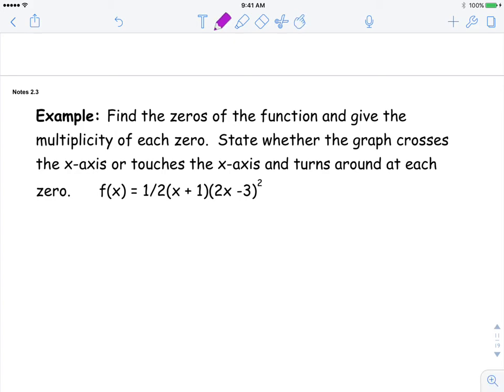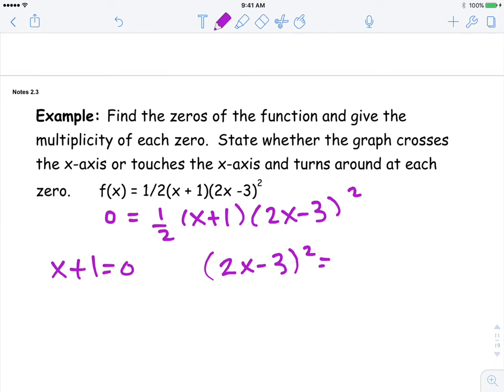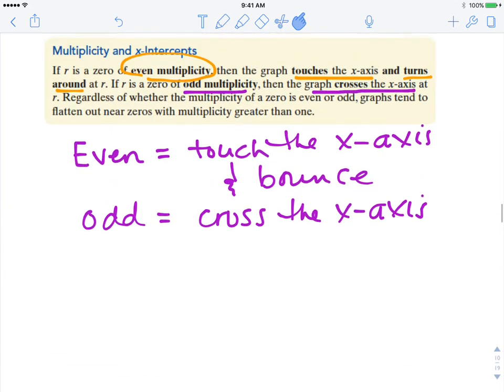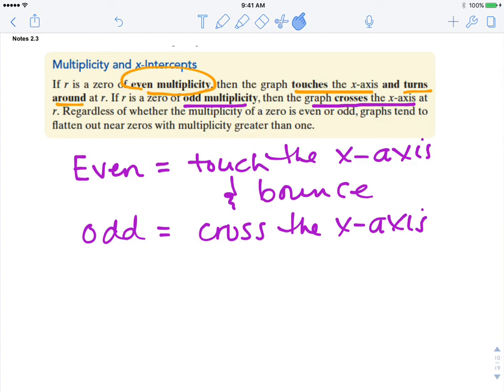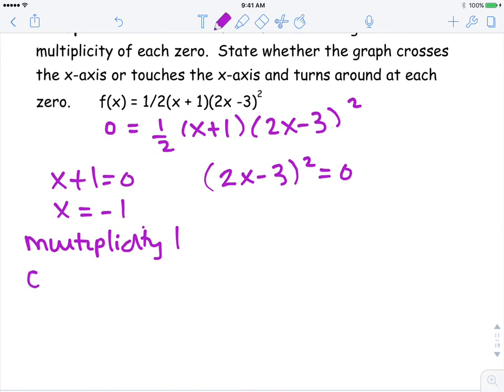So here's an example that says find the zeros of the function, give the multiplicity of each zero, and state whether the graph crosses the x-axis or touches the x-axis and turns back around. So we're going to set this function equal to zero. It's already in factored form, so we're ready to use our zero product property. We're going to undo. So we get a zero at x equals negative one. This multiplicity, there's just one of them. So that's an odd multiplicity. So what happens when it's an odd multiplicity? It just crosses the x-axis.